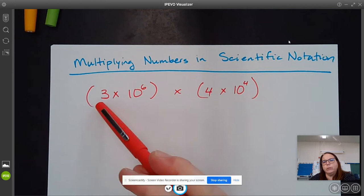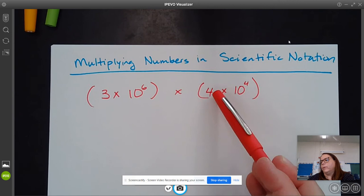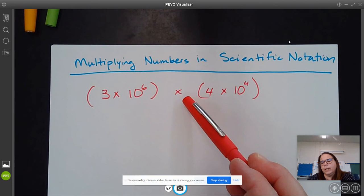So if we're going to be multiplying numbers, this is 3 times 10 to the sixth times 4 times 10 to the fourth. This is different than when we are adding or subtracting, and so that means we can multiply in whatever order we want to.